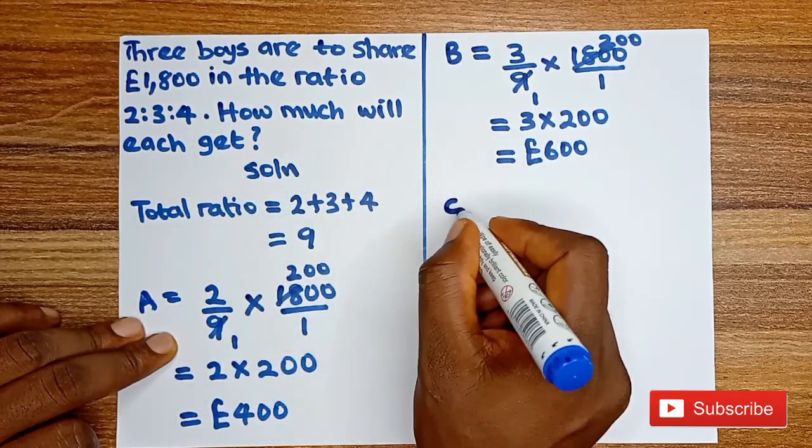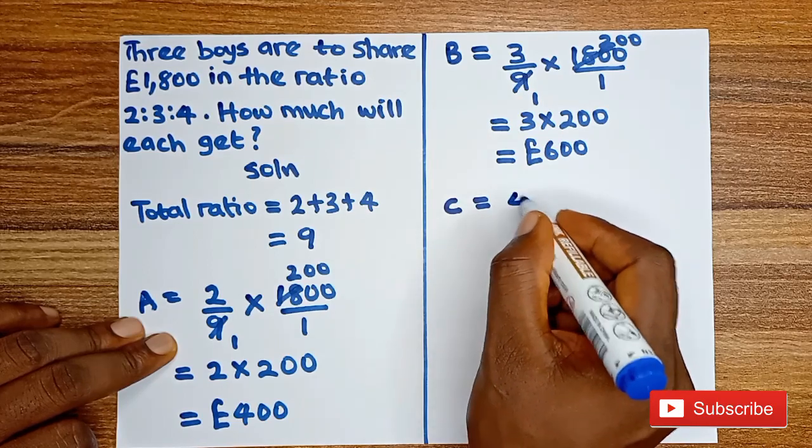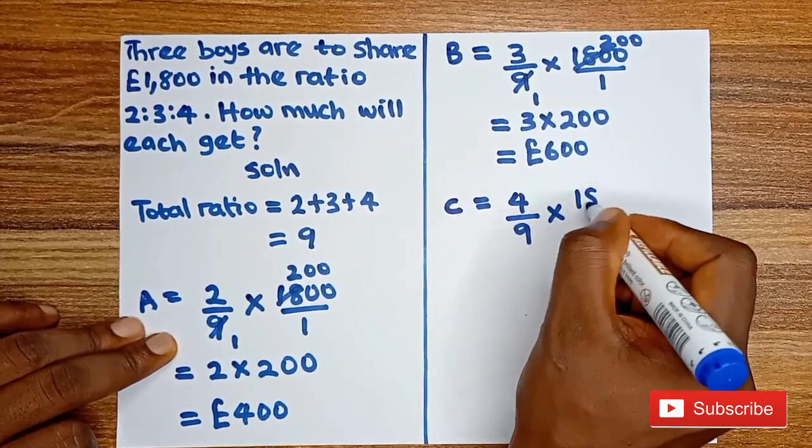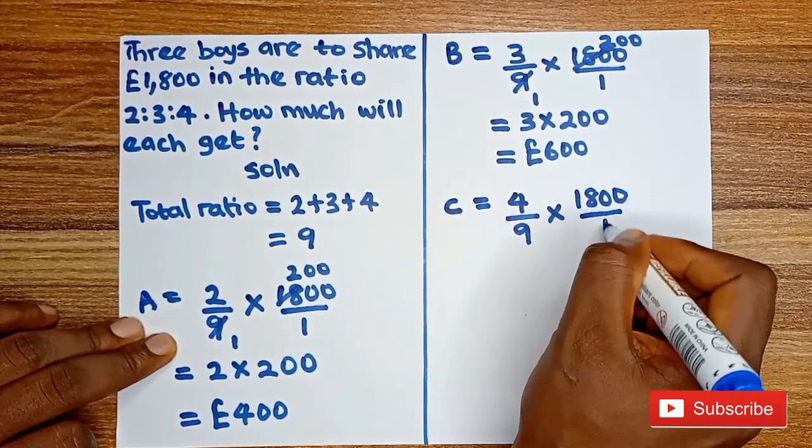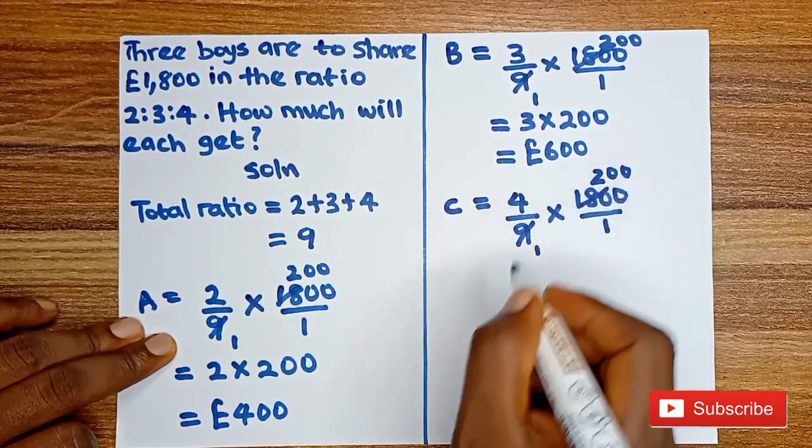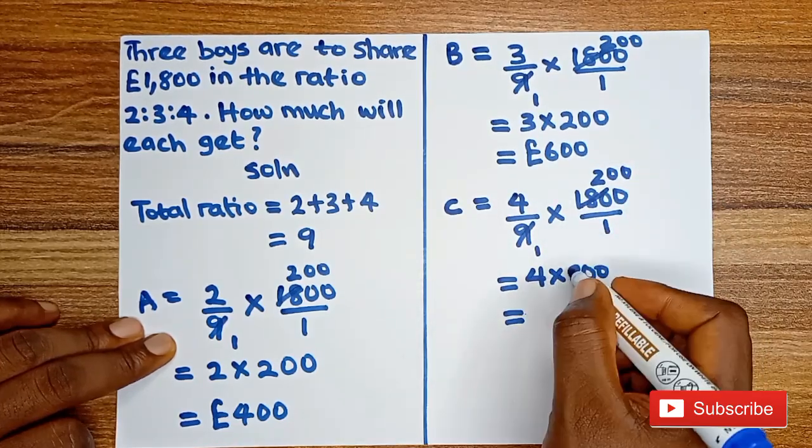So let's see what Boy C is going to get. His ratio is 4. So we are going to have 4 over 9 multiplied by 1,800 over 1. 9 here, 1, 9 here, 200. So we have 4 multiplied by 200.